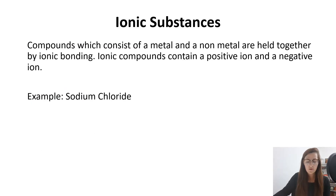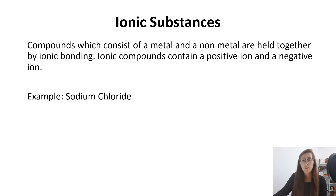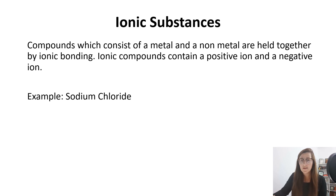Previously we've been looking at different types of bonding — covalent bonding and ionic bonding. And if you remember, ionic substances are compounds which consist of a metal and a non-metal ionically bonded together. Those compounds contain positive metal ions and negative non-metal ions. For example, sodium chloride.